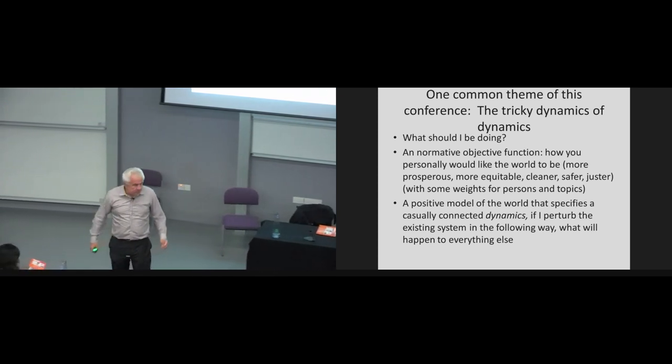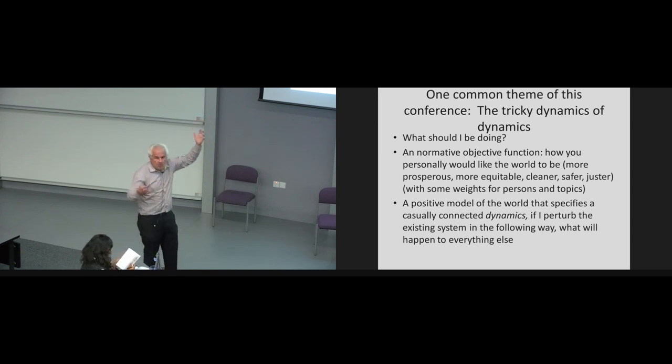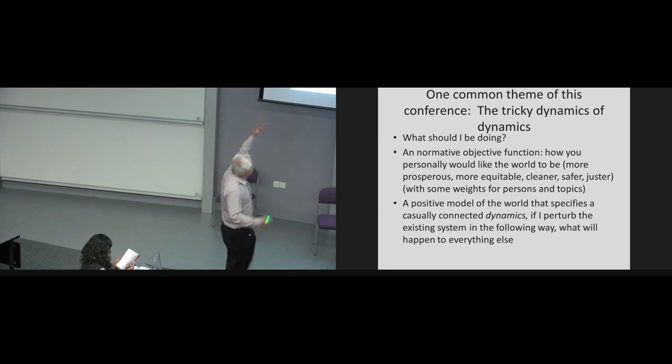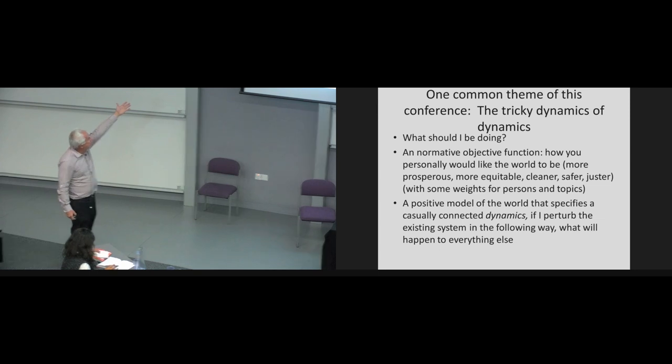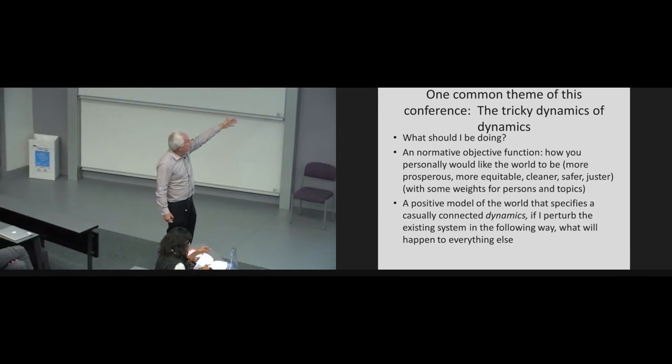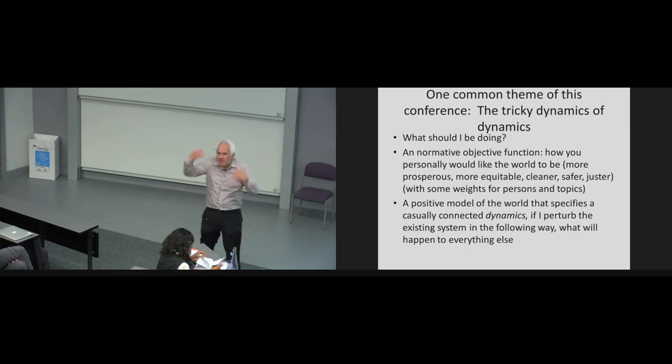So I want to talk about how we would form priorities about what we should be doing, and a way in which I think we are often commonly wrong. I think a lot of us have a normative objective function that helps us frame what we're doing. We have this idea of how we would like the world to be more prosperous, more equitable, safer, cleaner. And then we have a positive model of the world that specifies causally connected dynamics that would lead to a positive dynamic that would accomplish this normative objective.